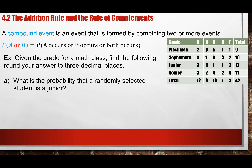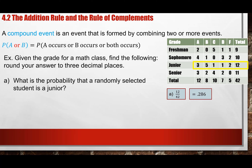What is the probability that a randomly selected student is a junior? We don't have the word OR, so we know this is a simple, single event. How many juniors do I have? I have 12 juniors out of the total of 42 students. So 12 divided by 42 gives approximately 0.286.